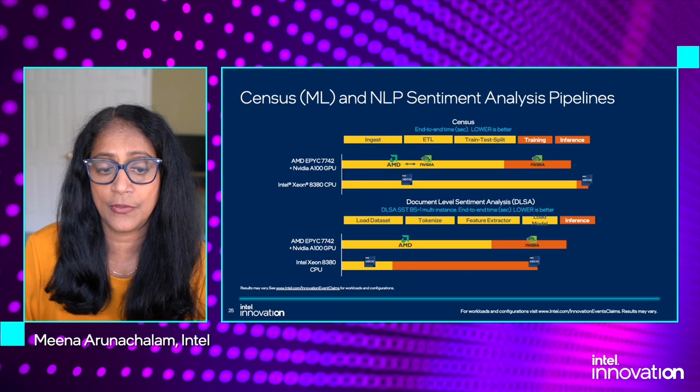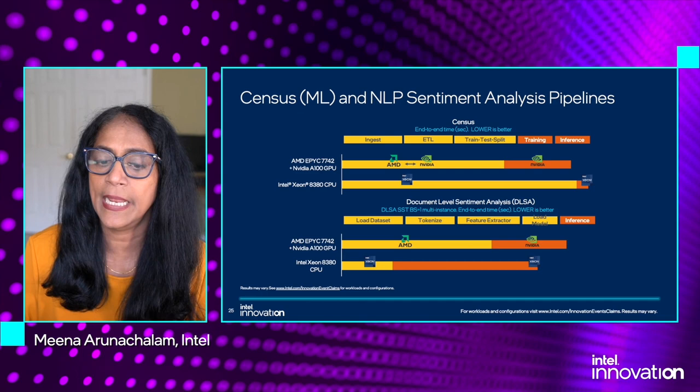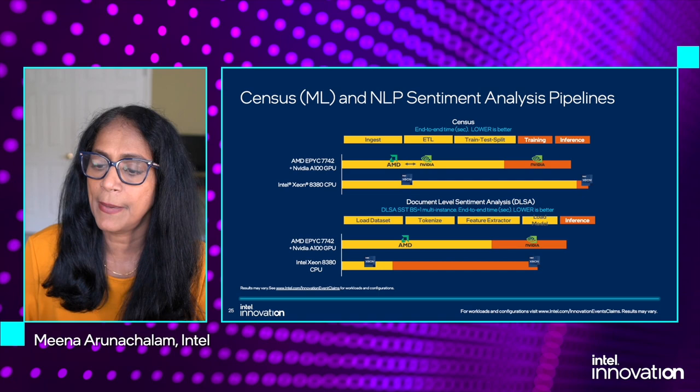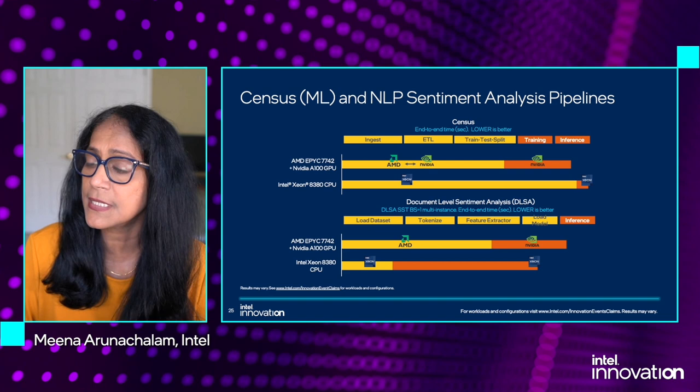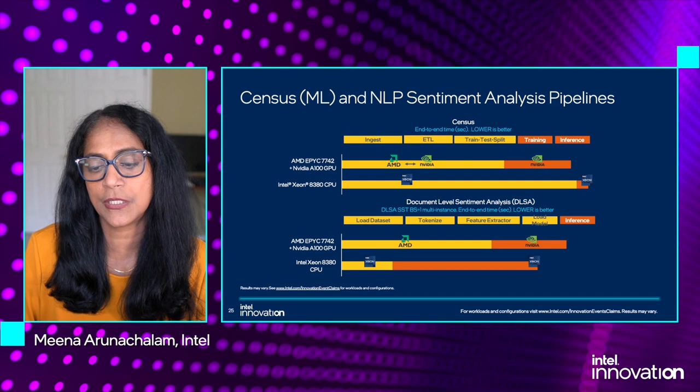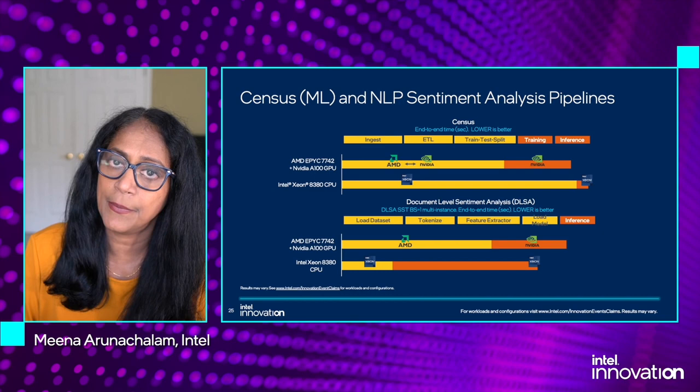AI is offloaded to NVIDIA. However, for the Xeon CPU case, all end-to-end phases including AI run on the CPU, taking advantage of the cores and the large memory capacity in place, which helps Xeon a lot. For DLSA, the third-generation Intel Xeon scalable processor edges out NV-A100 due to several optimizations to the end-to-end workload, also taking advantage of the high number of cores and therefore a higher number of instances than A100.